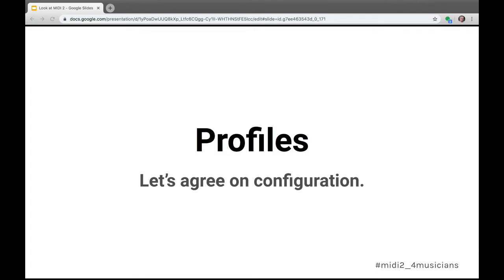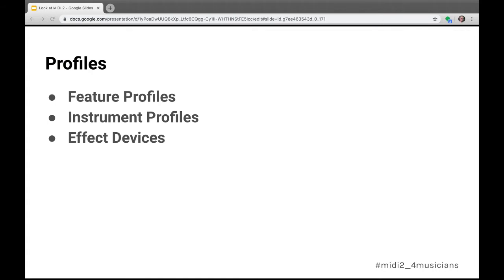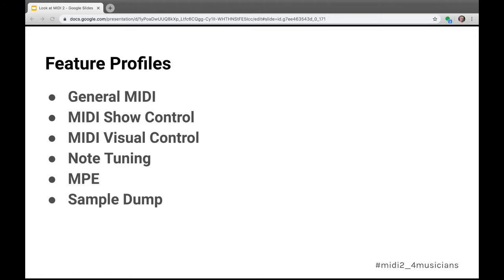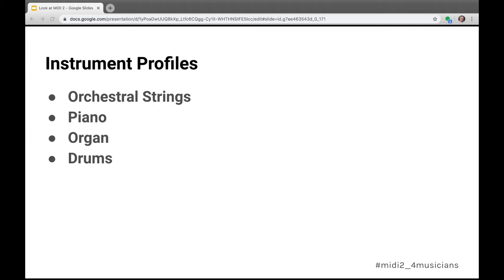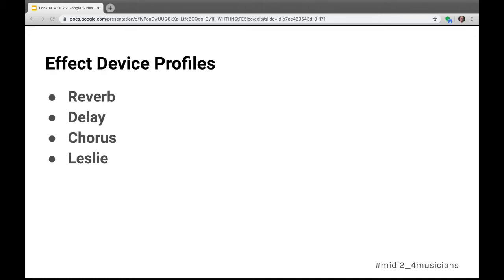Profiles are really auto-configuration. If you've used General MIDI, you already get the basic idea: any General MIDI device has a well-defined set of preset sounds, specific program numbers, receives on all 16 channels, with channel 10 as drums. A MIDI 2 profile is a set of rules for how a receiving device must respond to a chosen set of MIDI messages. There are three families: feature profiles (like General MIDI, show control, note tuning, MPE), instrument profiles (orchestral strings, piano, organ), and effect device profiles — a common set of controls that interact with a family of devices.